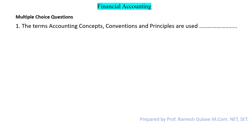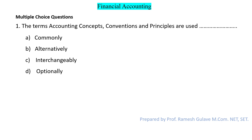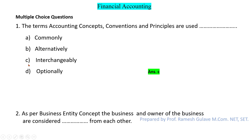Hello friends, today we are going to discuss important multiple choice questions on accounting concepts, conventions, and principles in financial accounting. The first question says: the terms accounting concepts, conventions, and principles are used — commonly, alternatively, interchangeably, or optionally? We know that these terms are sometimes used interchangeably, meaning they relate to the same thing. So option C is the right answer.